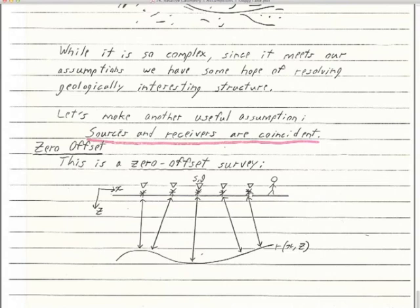We have to do stacking — NMO correction and CDP stacking — which is fraught with errors and interpretations, and we only get the flattest structure image. We only see some of the structures; things are smeared out. But if we have chirp data or marine data, this is easy — we have good zero offset data.